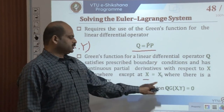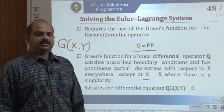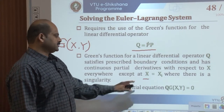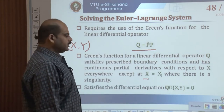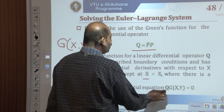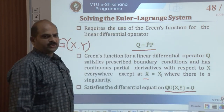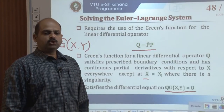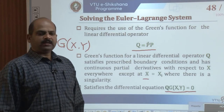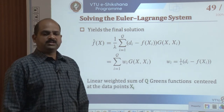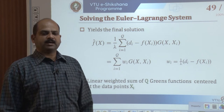Everywhere except at x equal to xi, there is a singularity. The Green's function satisfies the partial differential equation. The general equation satisfies q * g(x, y) = 0 everywhere except at the input x equal to y. Another way of saying this is to use the delta function to rewrite the equation as q * g(x, y) = delta(x, y).